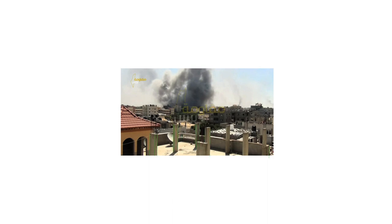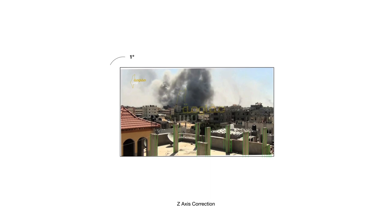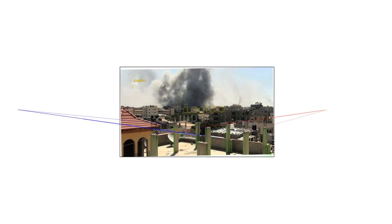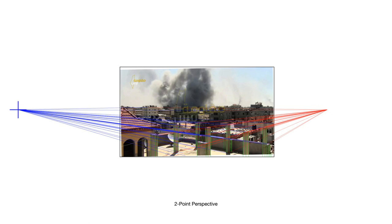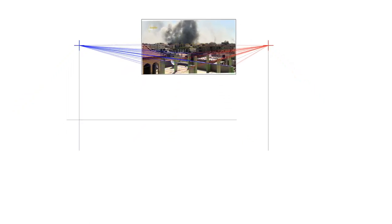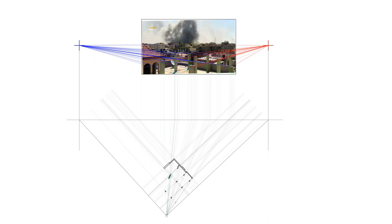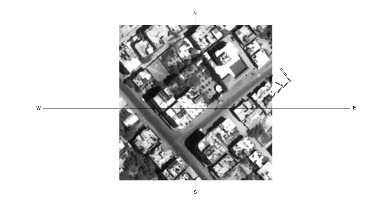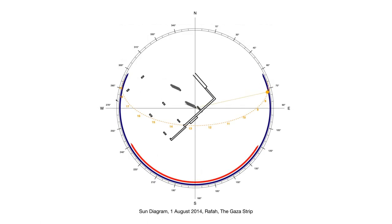We corroborate this process with an analogue calculation. We adjust the angle of the camera to the absolute horizon. We construct a plan of the rooftop using a two-point perspective. We use an analogue sun diagram to corroborate the same time.